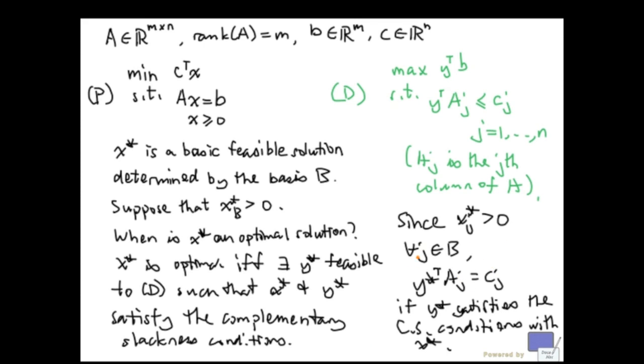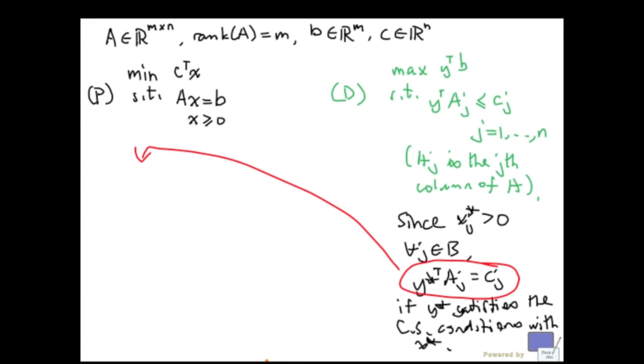So there are m equations here. So let's rewrite this system in more compact form. So this system here can be rewritten as y star transpose times A sub b equal to c sub b transpose. Alright, so c sub b is the vector formed from c by taking only the components indexed by elements in b.